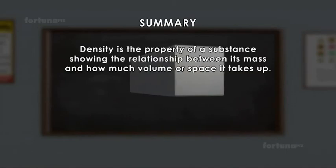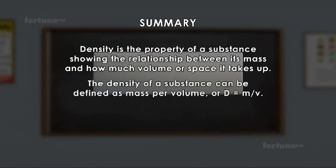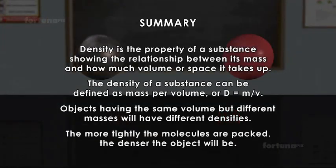Summary: Density is the property of a substance showing the relationship between its mass and how much volume or space it takes up. The density of a substance can be defined as mass per volume, or D is equal to M by V. Objects having the same volume but different masses will have different densities. The more tightly the molecules are packed, the denser the object will be.